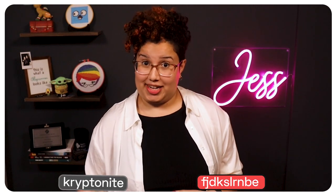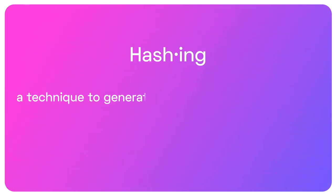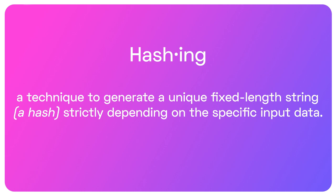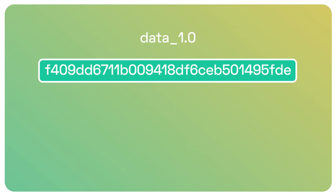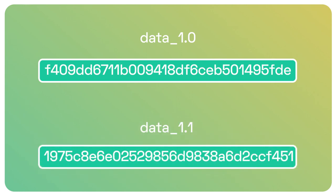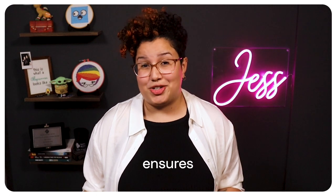Now that you understand the differences between encryption and encoding, let's take a look at hashing. Basically, hashing is a technique to generate a unique fixed-length string — a hash — strictly depending on the specific input data. Since the generated hash depends on the specific input data, any change to the input data, no matter how small or big, generates a different hash. Having a hash of a given piece of data, you can verify that the data has been altered by calculating its hash and comparing it with the hash that you had before. In other words, hashing ensures data integrity.